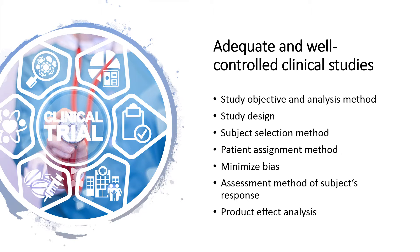The characteristics of a well-controlled study include: study objective and analysis method, documented in the clinical study protocol and report; study design with a valid comparison to a control — for example, placebo, dose comparison, active, no treatment, or historical controls — to provide a quantitative assessment of the product's effect. The clinical study design, including treatment duration, whether treatments are parallel, sequential, or crossover, and whether the sample size is predetermined or based upon interim analysis, should be included in the protocol and the report. Subject selection method should provide adequate assurance that subjects have the disease or condition being studied.